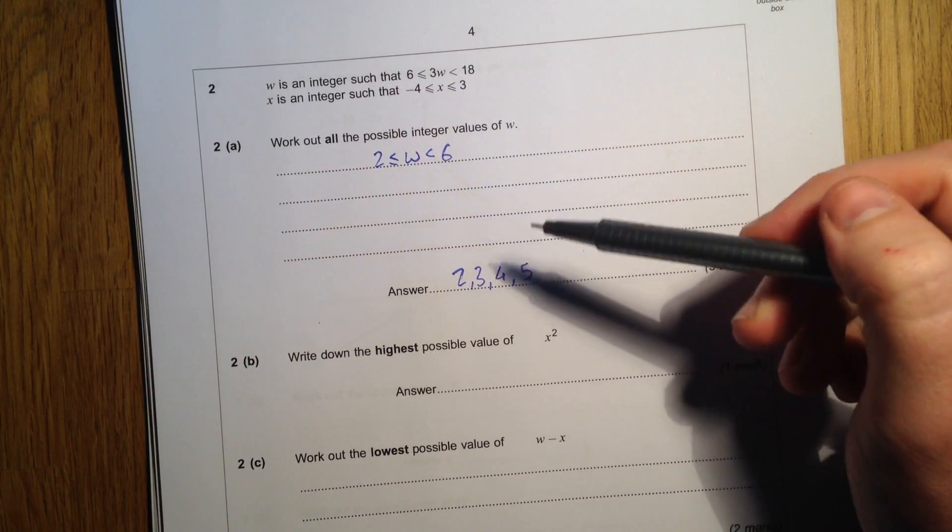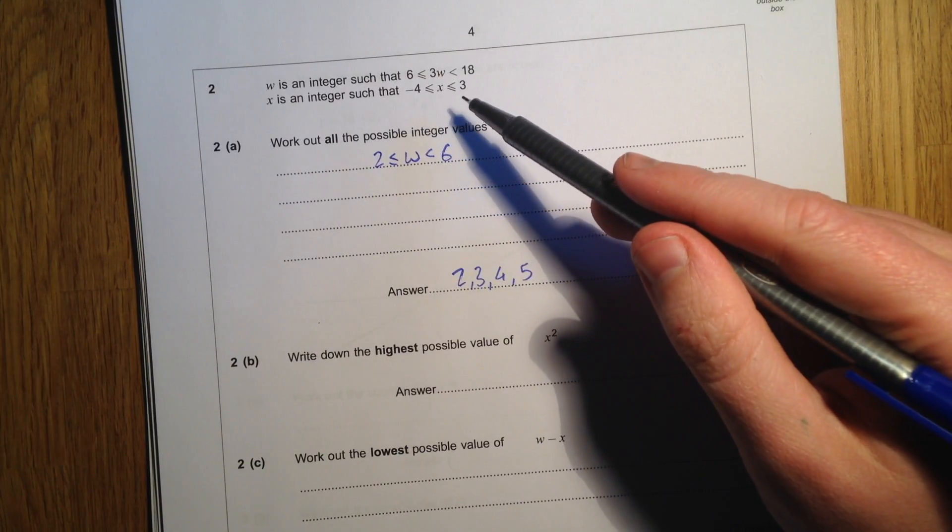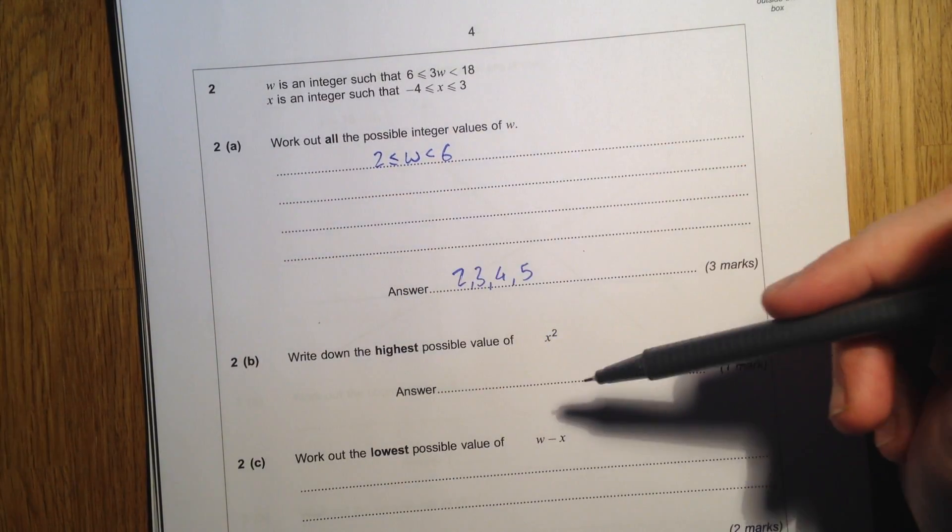So it would be tempting to say that 3 would be the largest value when we square it. We will get the maximum value of x squared.